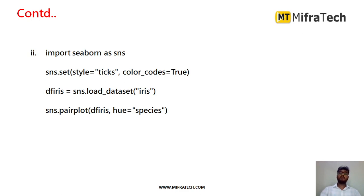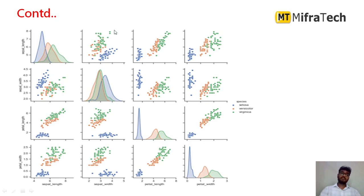We can also visualize data using the Seaborn library, another plotting library. First, import it with 'import seaborn as sns'. Then set the color palette, load the iris dataset using 'sns.load_dataset("iris")', and plot using 'sns.pairplot()'. The output graph shows blue for setosa, orange for versicolor, and green for virginica — the three different iris species. This makes it very easy to visualize the dataset.